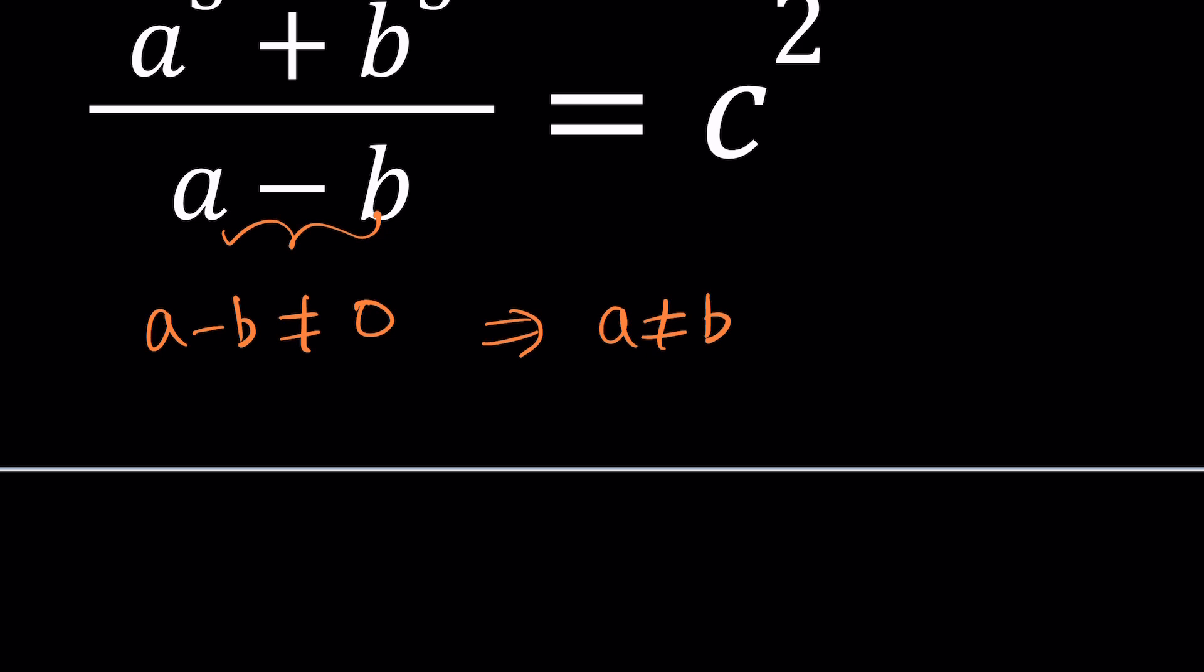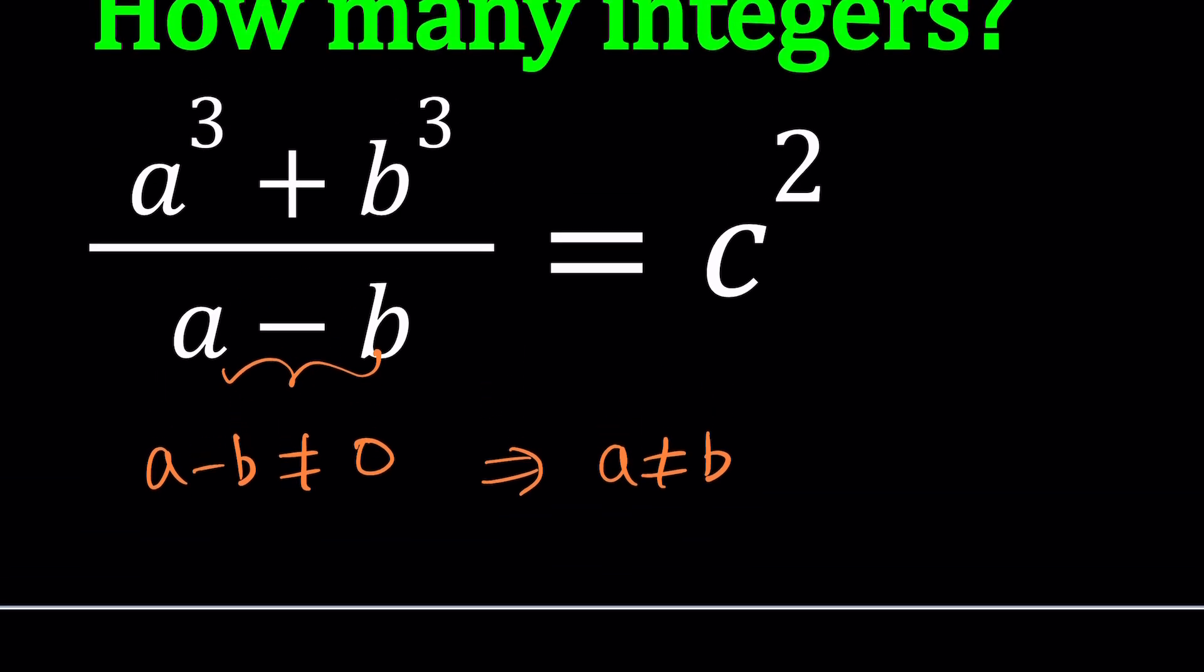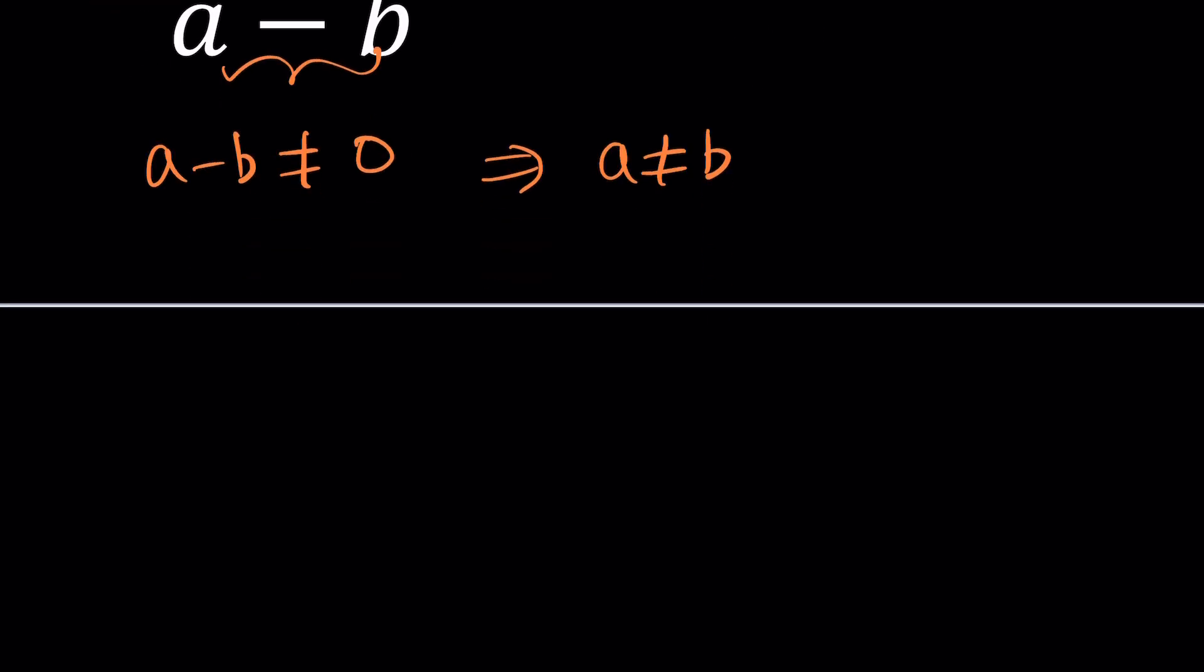Plus, the second thing we need to be careful about is, can the numerator be zero? And that's actually a good thing. Because if the numerator is zero, then c squared becomes zero, and that's kind of like a trivial solution. Yes, it's trivial, but it still counts. But does that help us with finding how many? Probably not, but it's worth looking into.